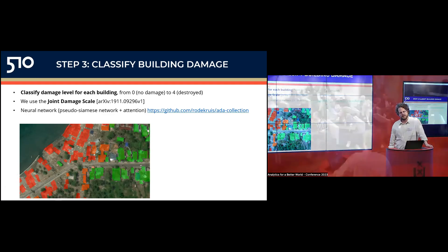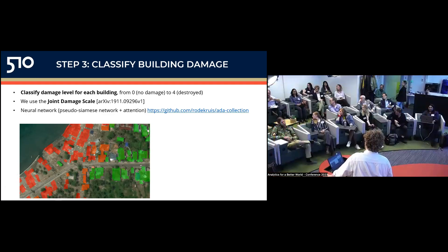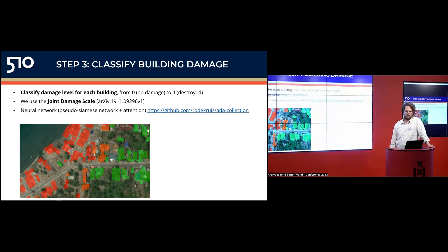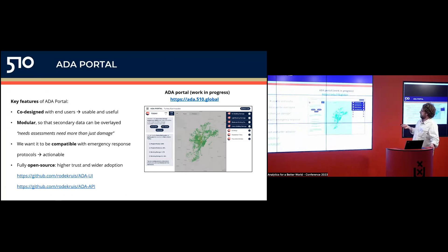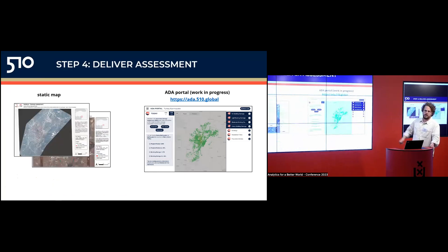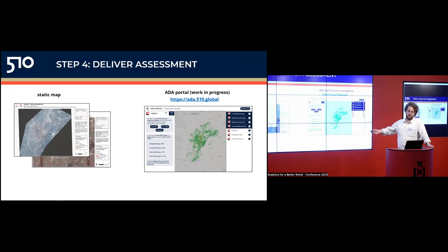Audience question: Does the model consider the function of a building — for example, if a hospital is damaged versus a regular building? Currently no, but we could do that. In OpenStreetMap you also have building type tags, which we already use for filtering. You could easily overlay that information in the portal as well, which could be quite crucial when talking about hospitals or critical facilities.